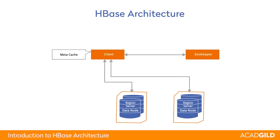There is another concept involved in HBase called the meta table. A meta table contains information like which region or on which region server the start key and end key will be found. It is of vital importance because without the meta table, you would have to scan every region of a particular table to get data. If you want to get data for a particular key and you have the meta table, you can directly go to the specified region server.